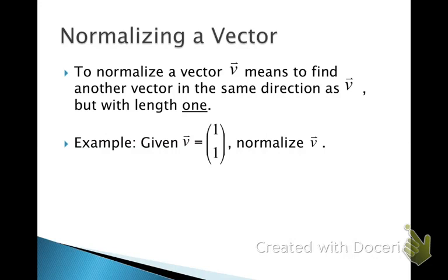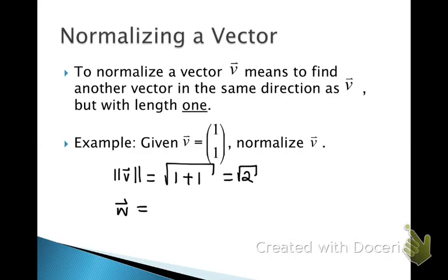Normalizing a vector simply means finding a vector of length 1 that is in the same direction as a given vector v. So if we want to normalize v on the real number line — say negative 3 divided by the absolute value of 3 gives us negative 1, which goes in the same direction as negative 3 but has length 1. To normalize a vector v, we find a new vector w in the same direction as v but with a length of 1.